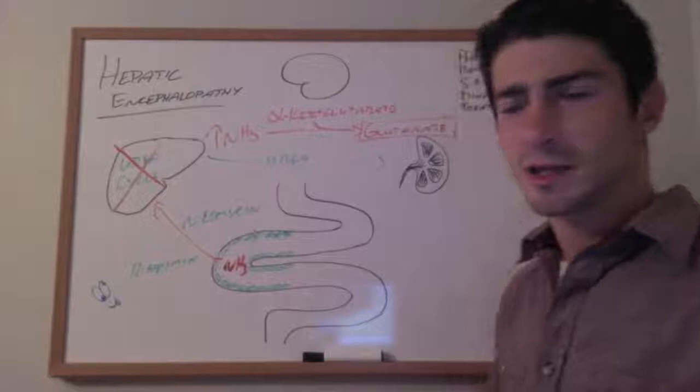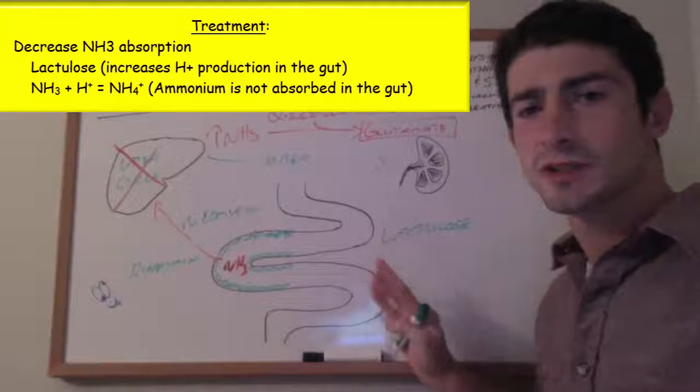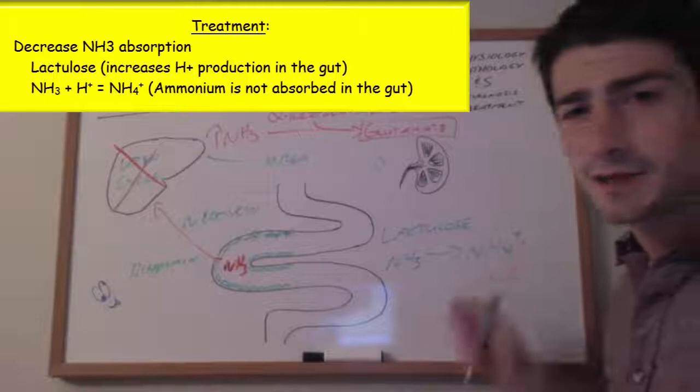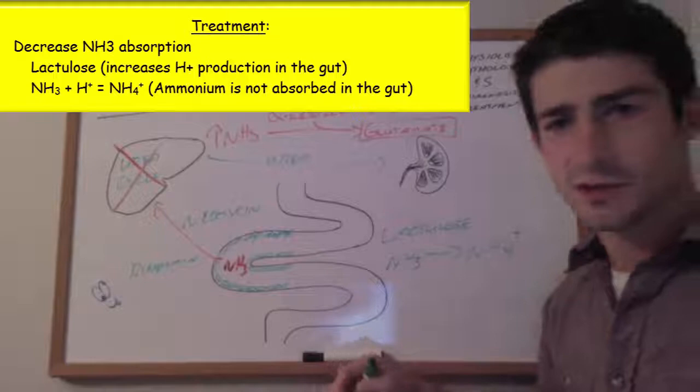The other way you can treat it is with something called lactulose. Lactulose acidifies the colon. Because the ammonia is in a more acidic environment, it gets converted to ammonium. As ammonium is a cation, it cannot be absorbed from the colon into the portal system, so that increases excretion.